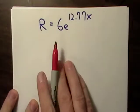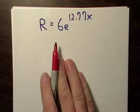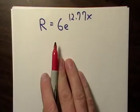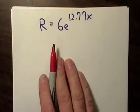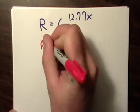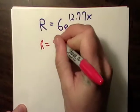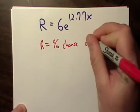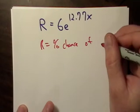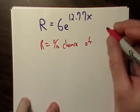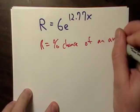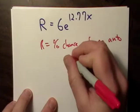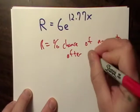But I came across this problem and it's in an older math book of mine, so I don't know if it's really all that accurate, but it's pretty good. This R right here equals a percent chance of an auto accident after you've consumed some alcohol.